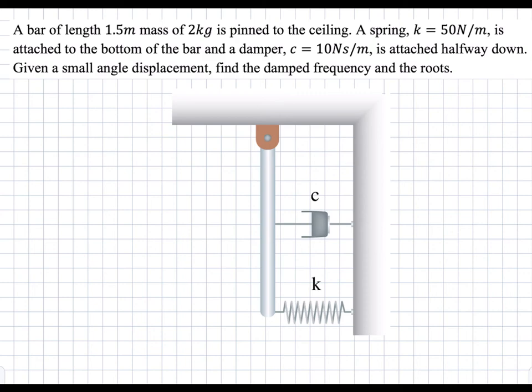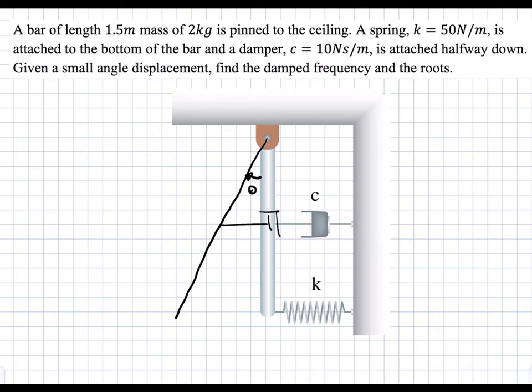In this problem there's a bar attached to a spring and a damper, and we're asked to find the damped frequency. First, what we need to do is displace the system and draw a free body diagram based on that displacement. These forces will be added to a moment balance to get our equation of motion.